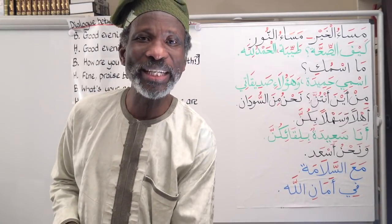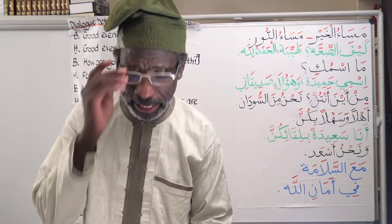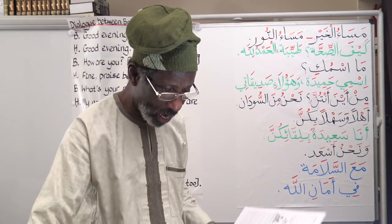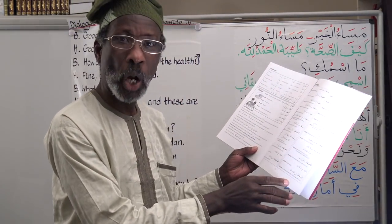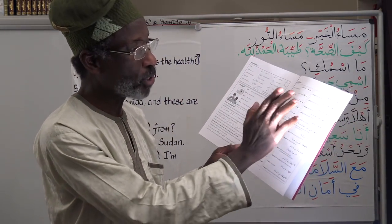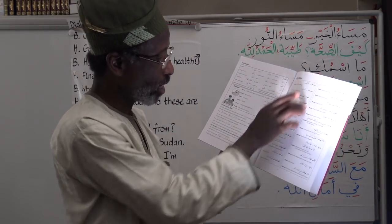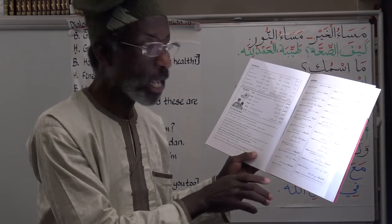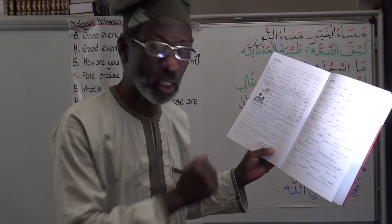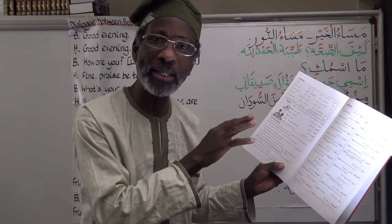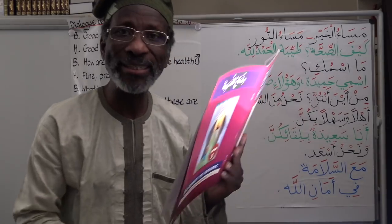Now let's do the second part of the dialogue on page 6. We've done the right-hand column between Bashir and Mazin, two boys. The second part is between Basma and Hamida, two girls.